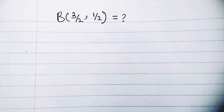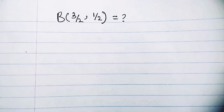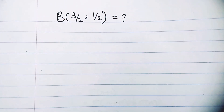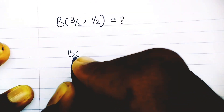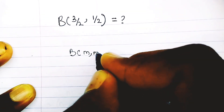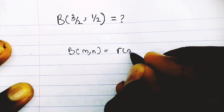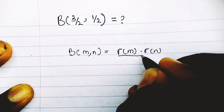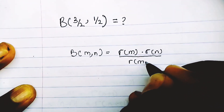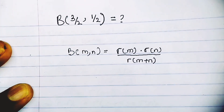Anytime you are asked to calculate the beta of fractions — when you have fractions in the bracket — just remember your relationship between the beta and gamma function. The relationship we established on the last video was: Beta(m, n) = Γ(m)·Γ(n) / Γ(m+n). This is the form we will use to solve the problem.